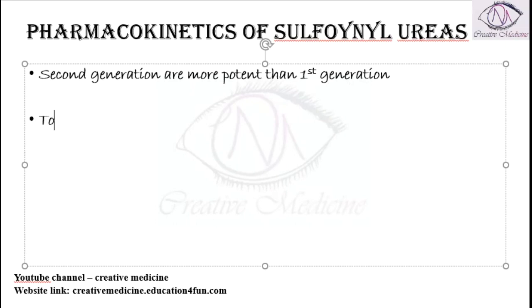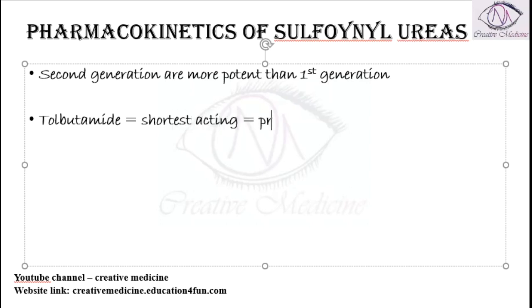We have the drug tolbutamide. Tolbutamide is the shortest acting sulfonylurea and it is preferred in elderly patients.